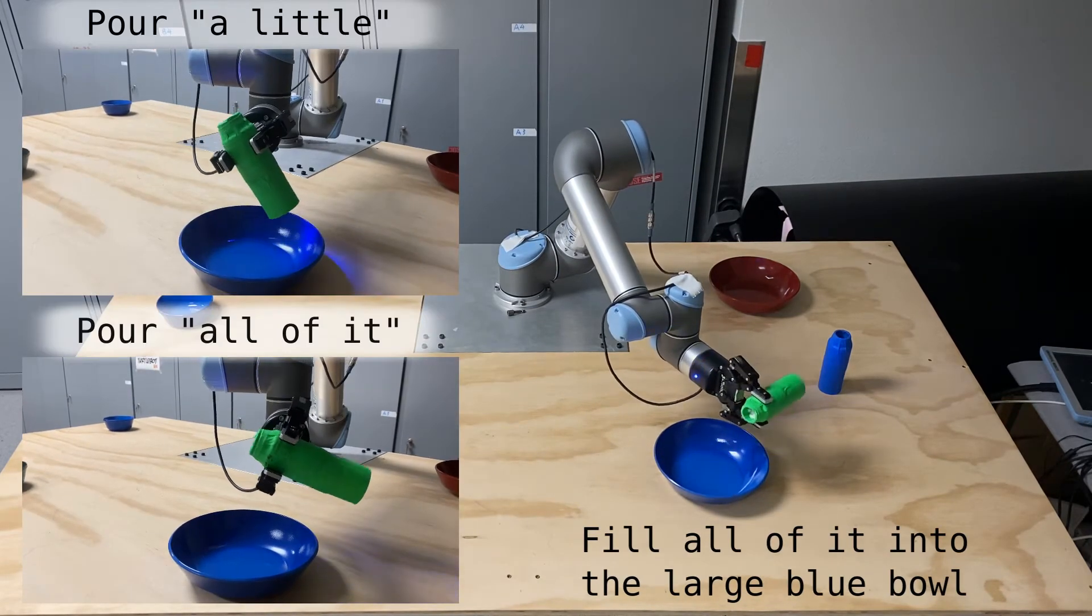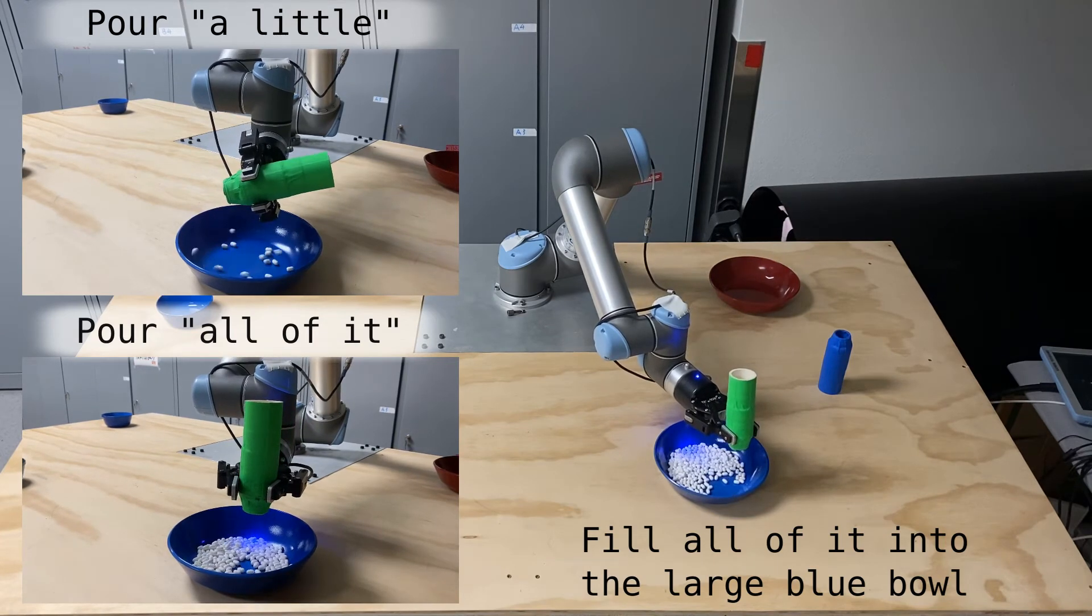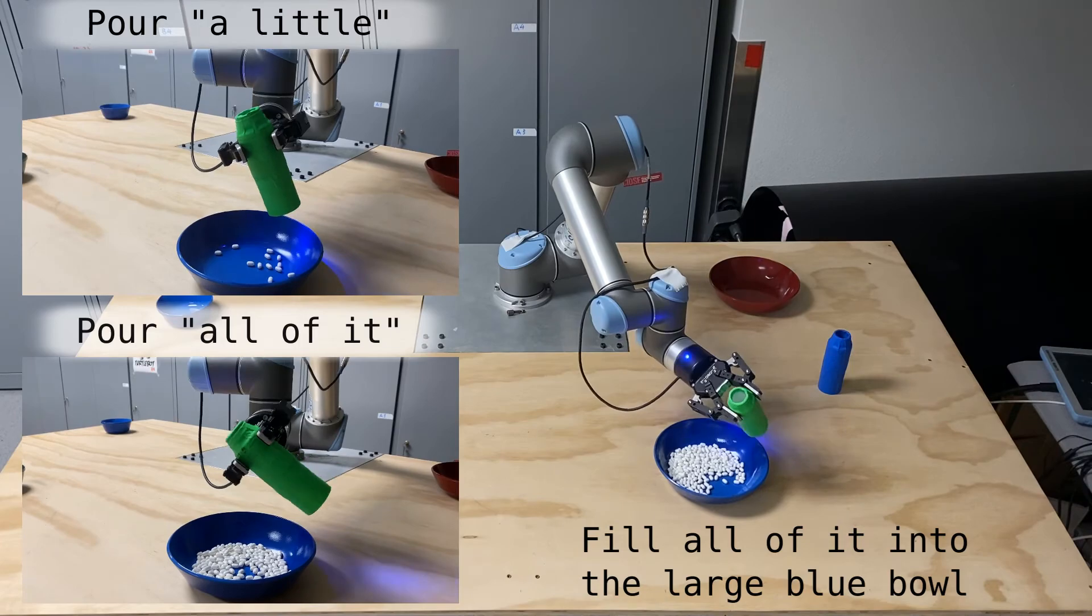By using imitation learning, the robot learns to execute picking and pouring actions while following desired task modifiers like a little and all of it during policy generation.